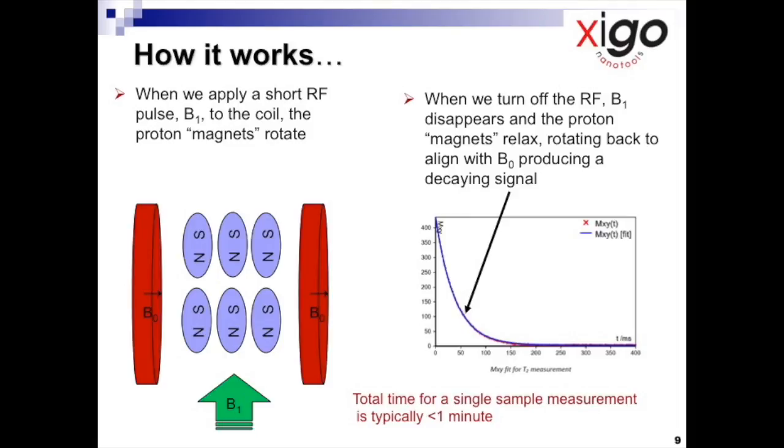When the RF pulse is switched off, B sub one is removed, and so the proton magnets relax and rotate back to their original orientation within B sub zero.